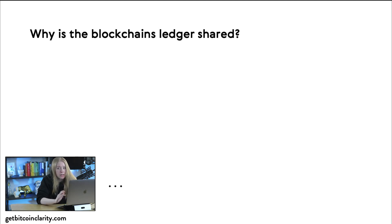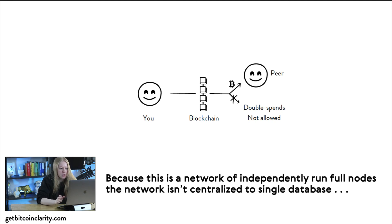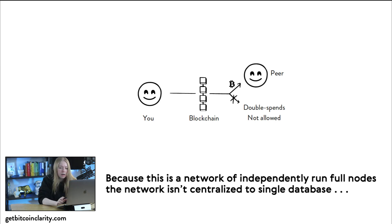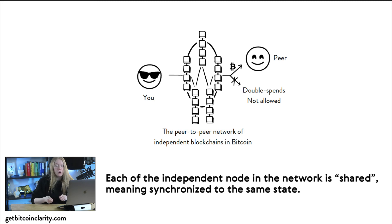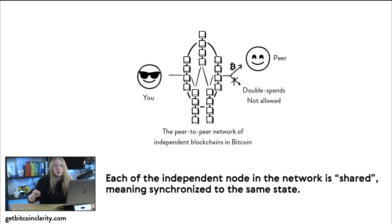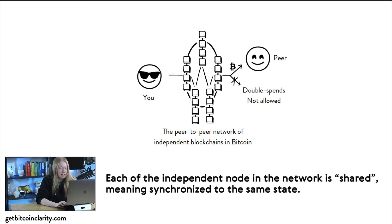Why is the blockchain's ledger shared? That's the more interesting part of the question. This is a network of independently run full nodes — it isn't centralized to a single database. Traditional middlemen are always centralized: to a company, a bank, or a government. With Bitcoin, although we have a shared blockchain, it's not centralized to a single database. We all maintain our own copy of the database — decentralized — but we synchronize those databases to the same state. When anyone on the network makes a transaction, we all agree it has occurred. We're agreeing on the order transactions occur at any point in time. If we disagree on order, we're no longer on the same ledger.